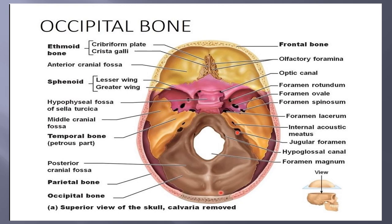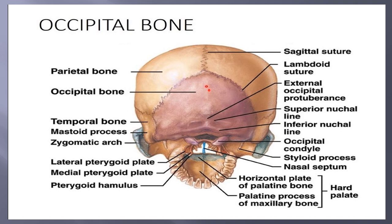Through the hypoglossal canal, the 9th, 10th, and 11th cranial nerves pass. Here you can see some depressions where the sigmoid sinus is present. In the external view of the occipital bone you can see the protuberance, two condyles, and the nuchal line. You can also see the squamous suture and the nasal septum — vomer, perpendicular plate of ethmoid bone, and the septal cartilage form the nasal cavity.